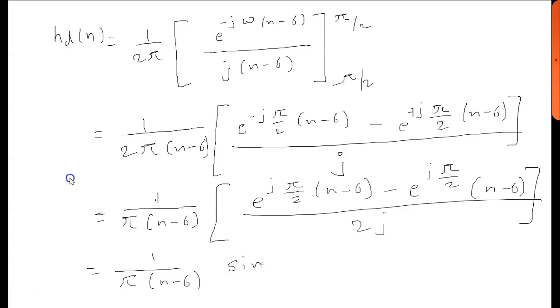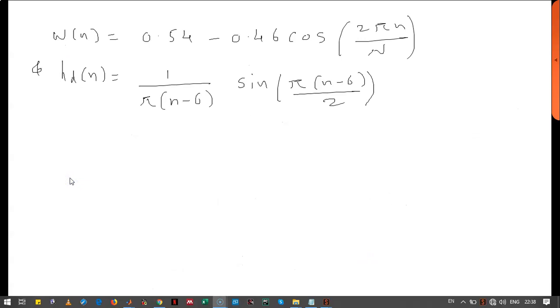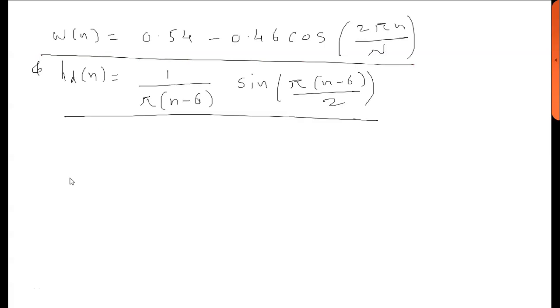We know that for the Hamming window, the windowing function is w(n) = 0.54 - 0.46cos(2πn/N). The desired transfer function of the filter is as shown.